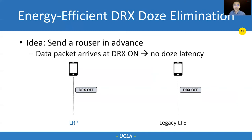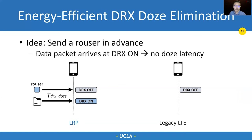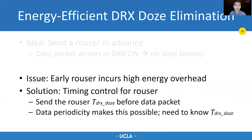To eliminate doze latency, the core idea is to make sure the device is in DRX-on when the data packet arrives. LRP achieves this by sending a router packet. It turns the device to the on state, so when the real data packet arrives, it can directly proceed to the scheduling part. Without LRP, a packet needs to go through the doze period. One issue is if we send the router too early, it will incur unnecessary energy consumption. The solution is to accurately control the timing of the router. We derive the optimal timer, and the regular traffic pattern makes it possible to send the routers properly.